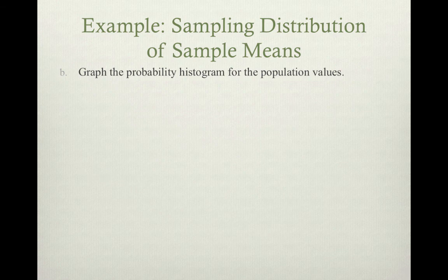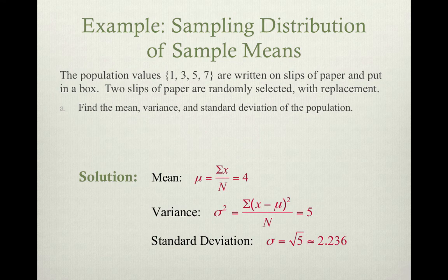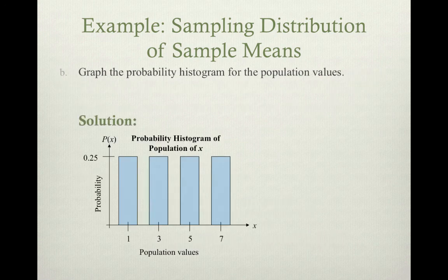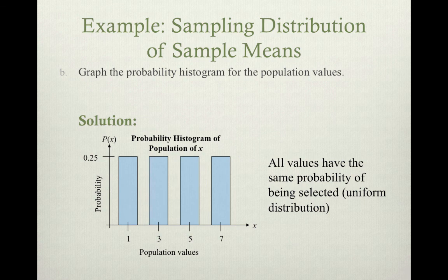Let's graph the probability histogram for the population values. We've got four numbers in a box: 1, 3, 5, and 7. What's the probability I select a 1? Well, 1 over 4, of course. Each number has the same probability of being selected — 1 over 4, or 25%. And that's all that histogram is saying.